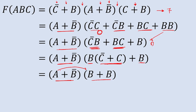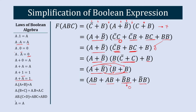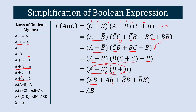Multiplying out (A plus B-bar)·(B plus B): A·B plus A·B plus B-bar·B plus B-bar·B. Here B-bar·B equals 0 by A·A-bar equals 0. We have two copies of AB, so AB plus AB becomes AB, using A plus A equals A. The result is AB.